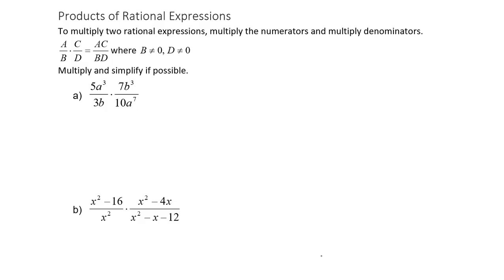Now that we've talked about rational expressions, reducing rational expressions, and graphing rational functions, we're going to talk about products of rational expressions. When you multiply two rational expressions together, you get a product. Note that if you can reduce them, please just do that — reduce the fractions first, because otherwise it's just one more place you could make an error later.